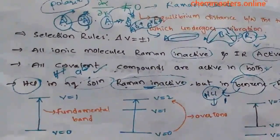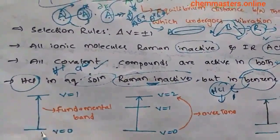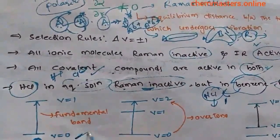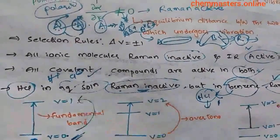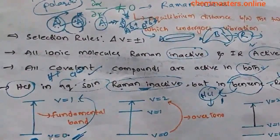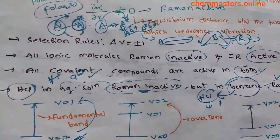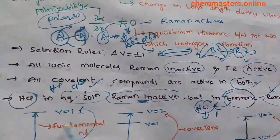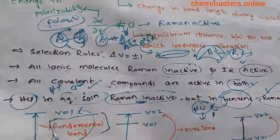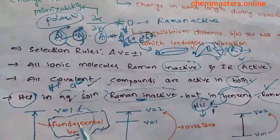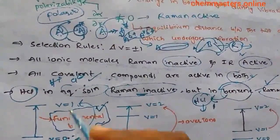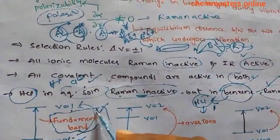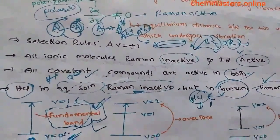When we give energy to a vibrationally active molecule, it transforms from the ground state vibrational energy level to higher energy levels. If it transforms from v₀ to v₁, that transition is called a fundamental transition, and the band formed in the graph is called the fundamental band.